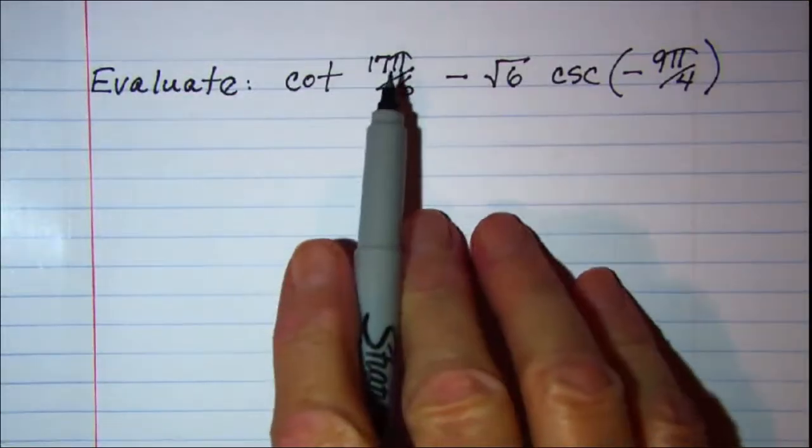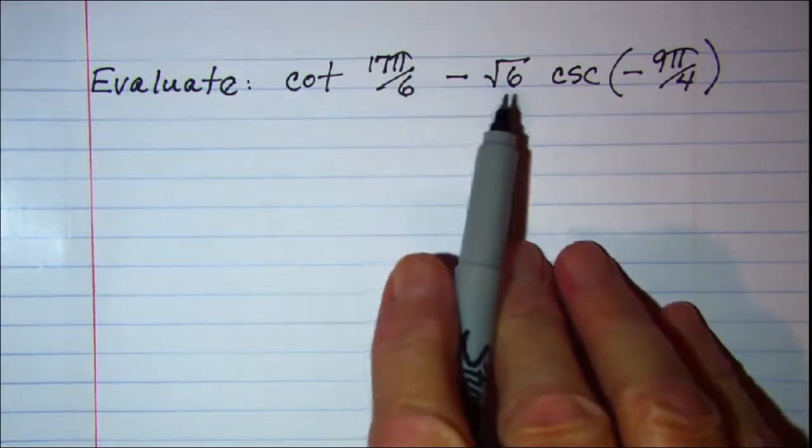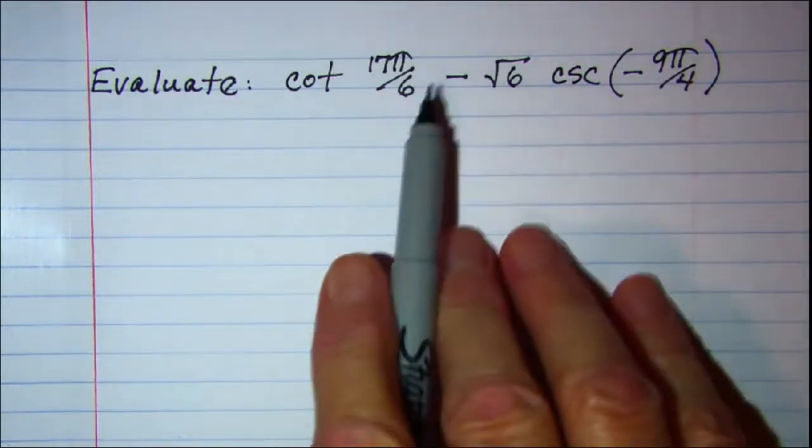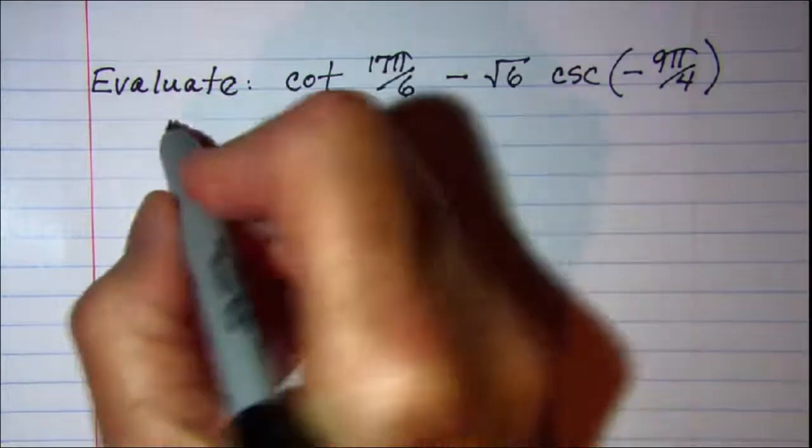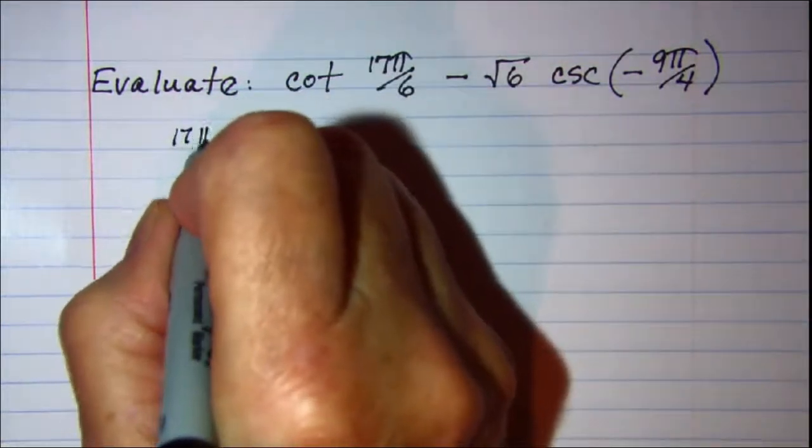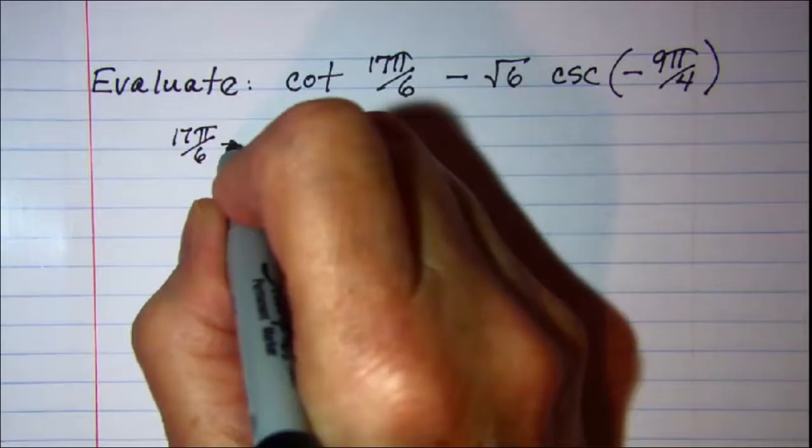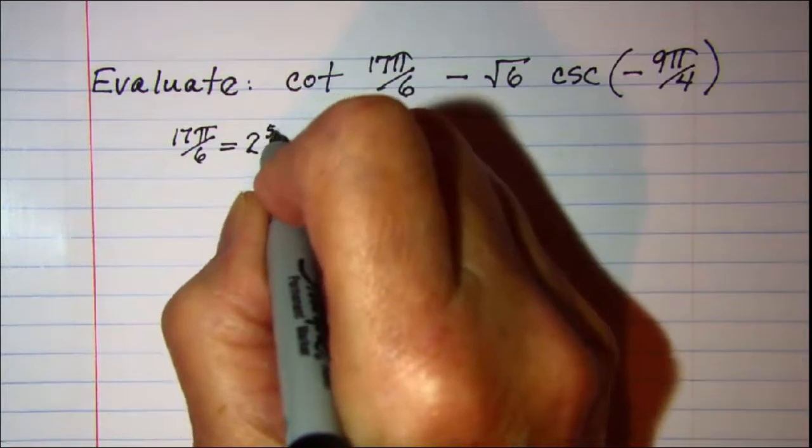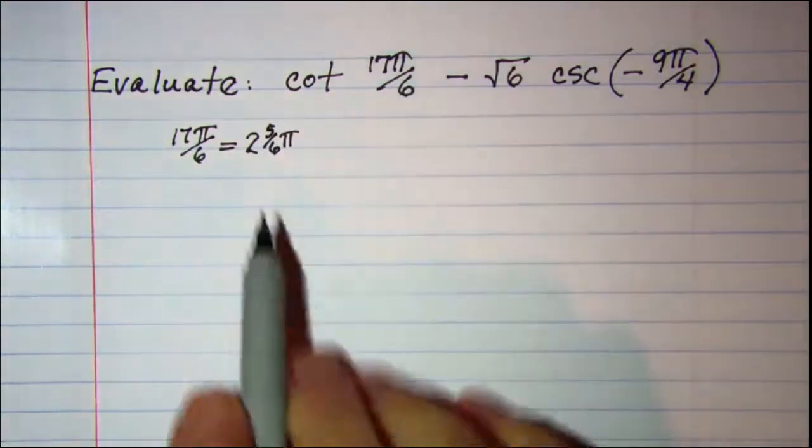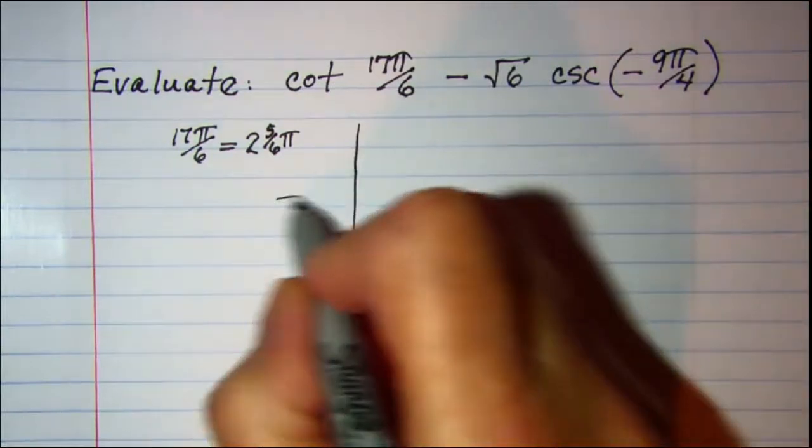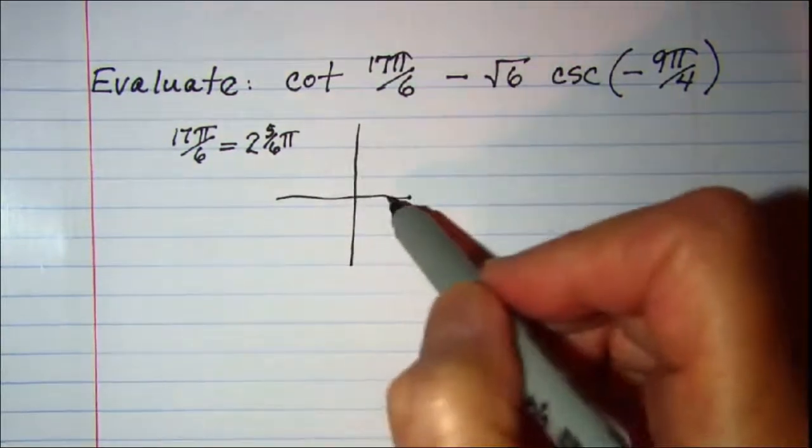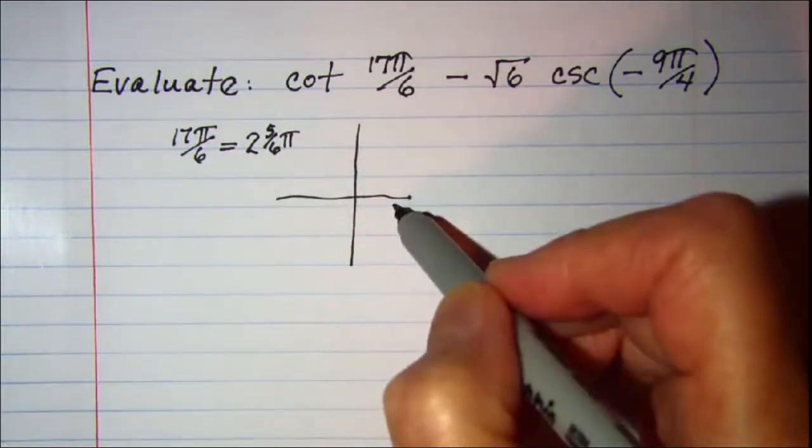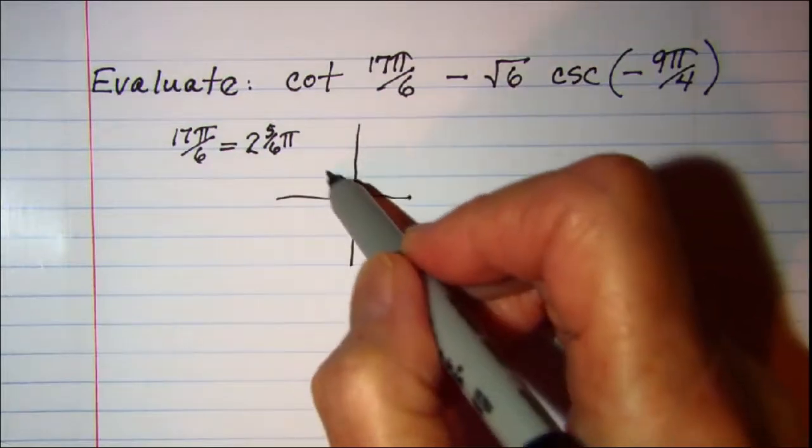On this one, cotangent 17π over 6 minus the square root of 6 times the cosecant of negative 9π over 4. 17π over 6, I would think of that as 2 and 5/6. So my reference triangle, I need a positive rotation. There's 1π, 2π, and then 5/6 would put me over in quadrant 2.